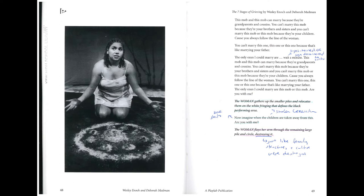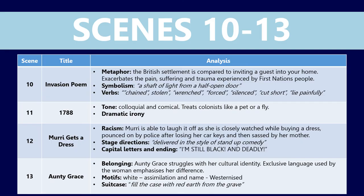I'll explain that again. This mob and this mob can marry because they're grandparents and cousins. You can't marry this mob because they're your brothers and sisters. And you can't marry this mob or this mob because they're your children, because you always follow the line of the woman. You can't marry this one, this one, or this one because that's like marrying your father. The only ones I could marry are this mob or this mob. Are you with me? The woman gathers up the smaller piles and relocates them on the white fringing. Now imagine when the children are taken away from this. Are you with me? The woman flays her arms through the remaining large pile and circle, destroying it.